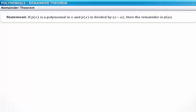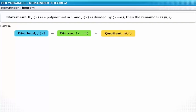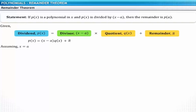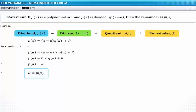Let's see how we can verify this theorem. Given that the dividend is p of x and the divisor is x minus a, let the quotient be q of x and the remainder be r. By the division rule, p of x equals x minus a times q of x plus r. This is true for all real values. Substituting x equal to a gives p of a equals a minus a times q of a plus r, which simplifies to r equals p of a.